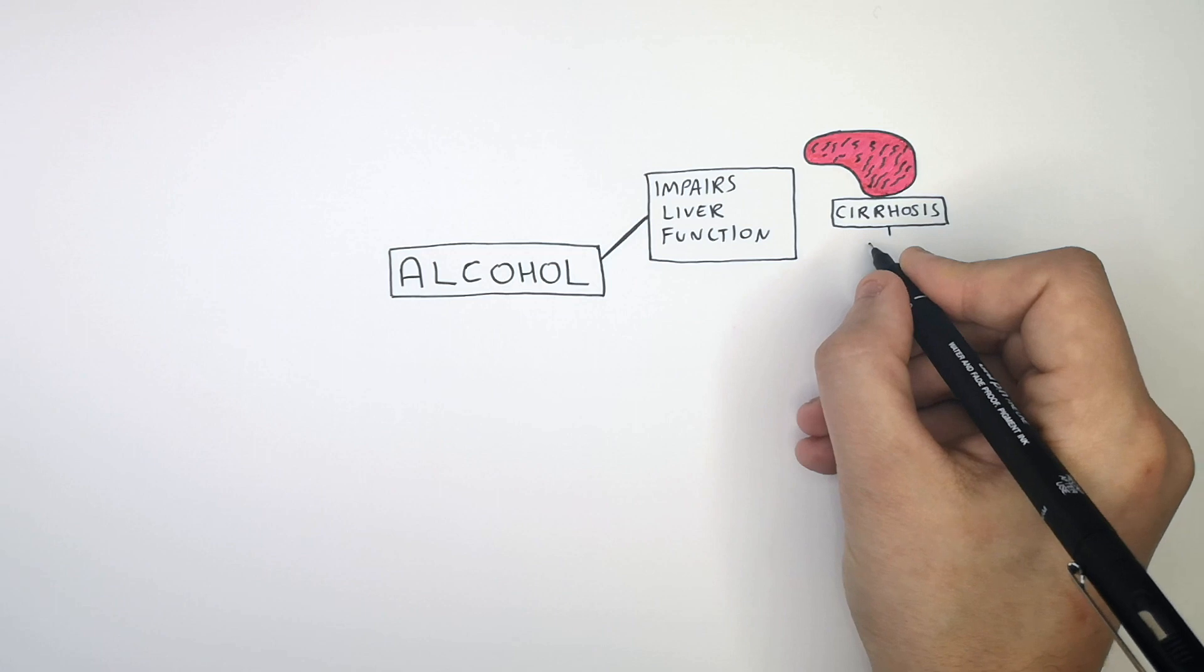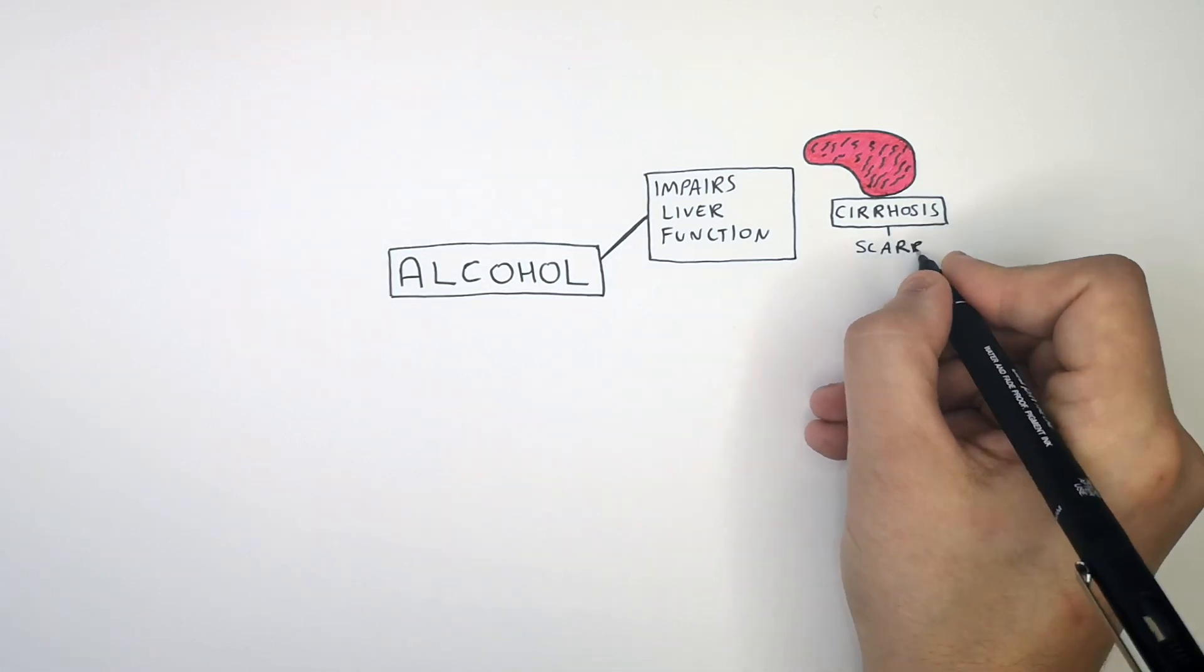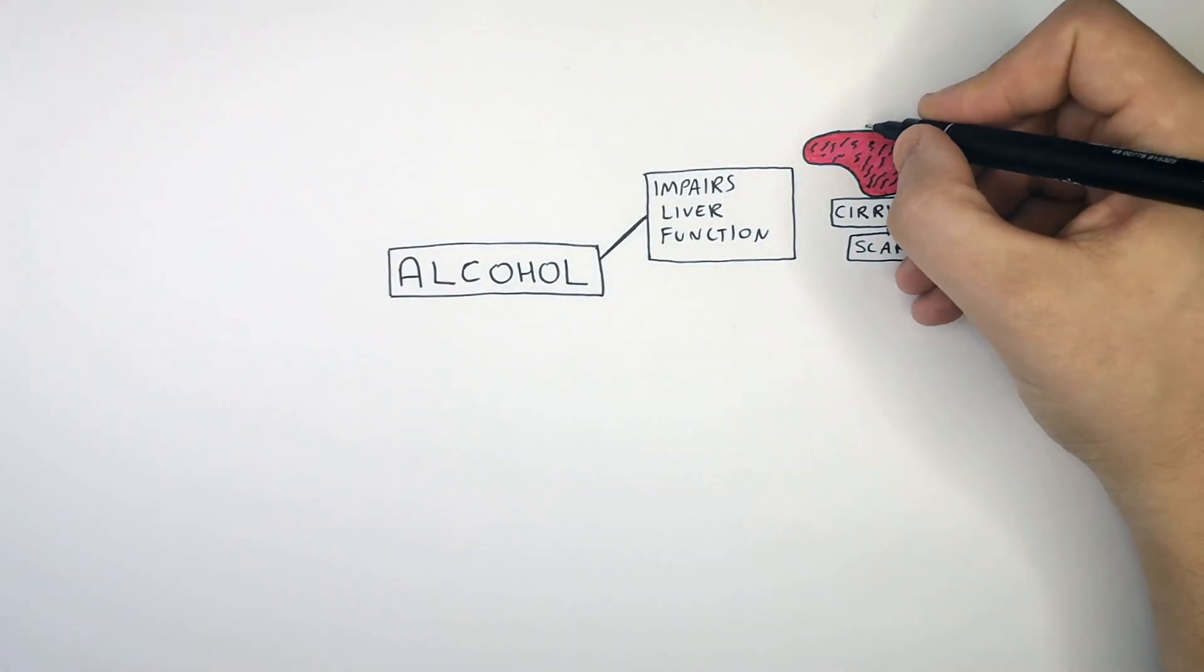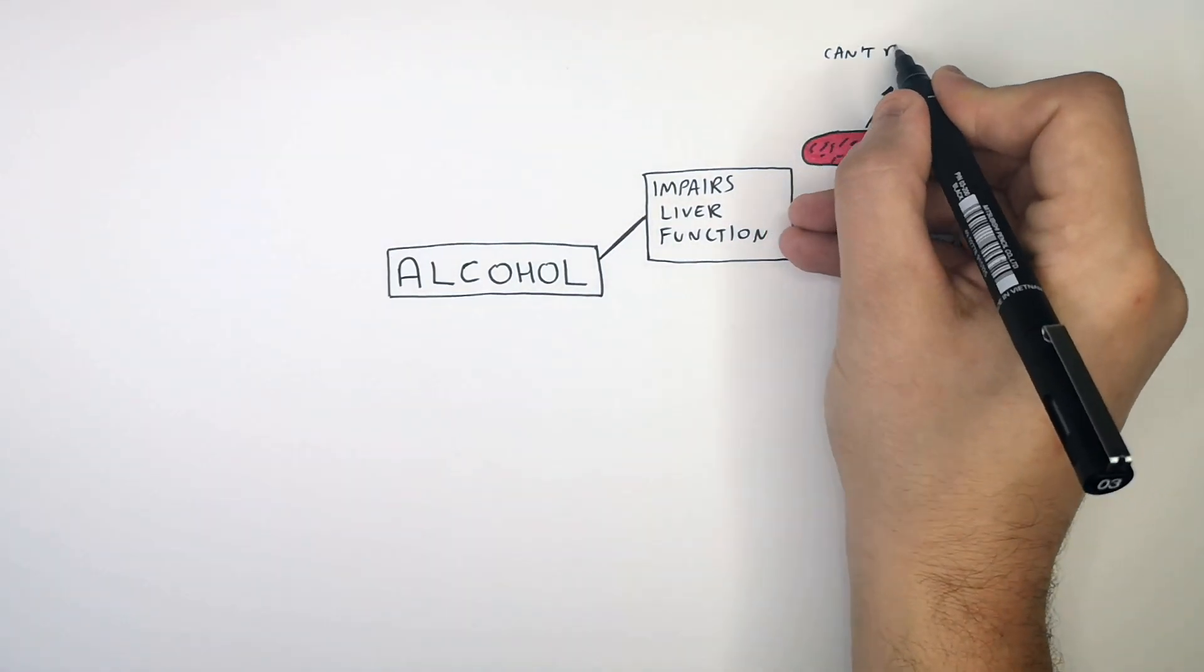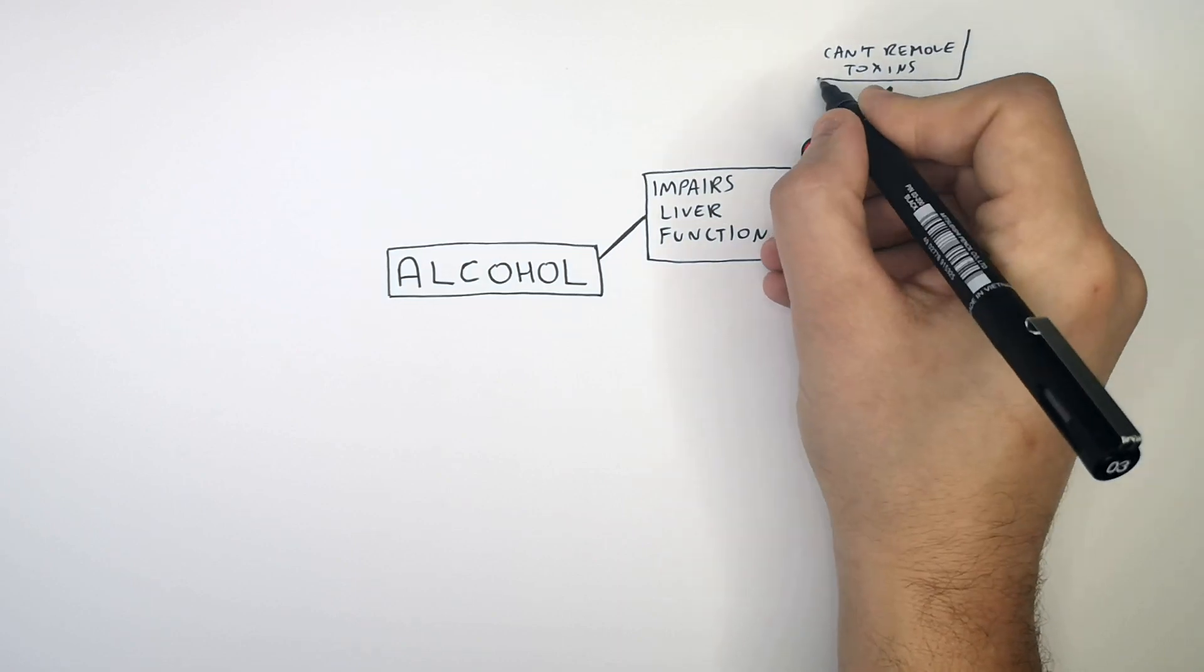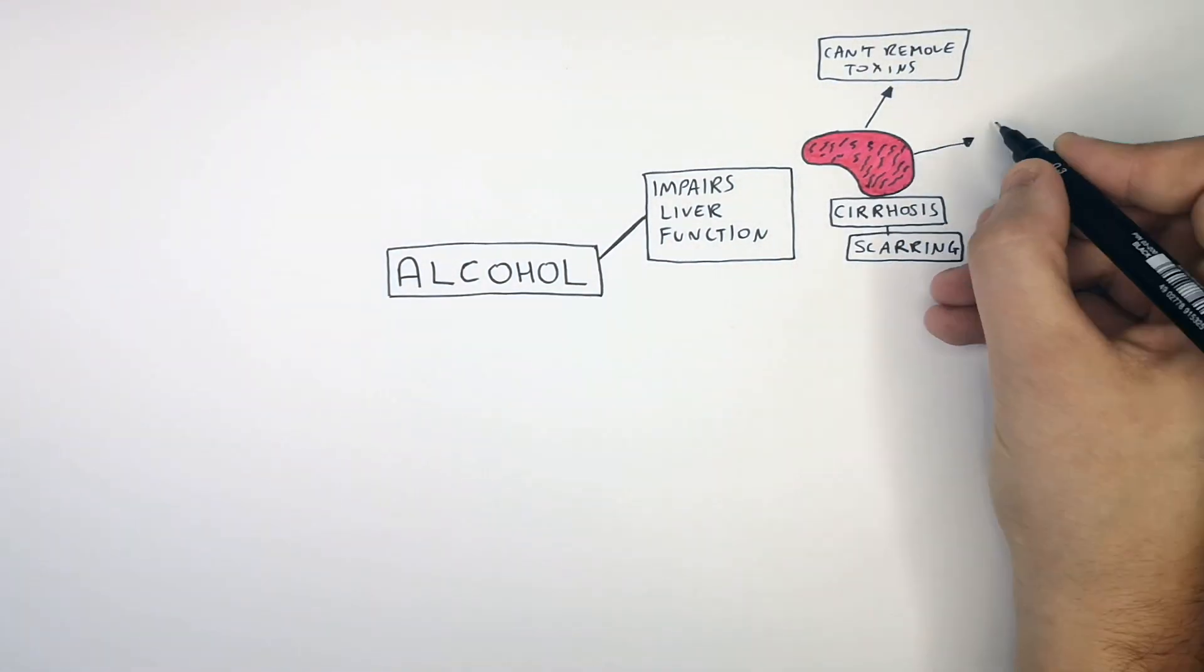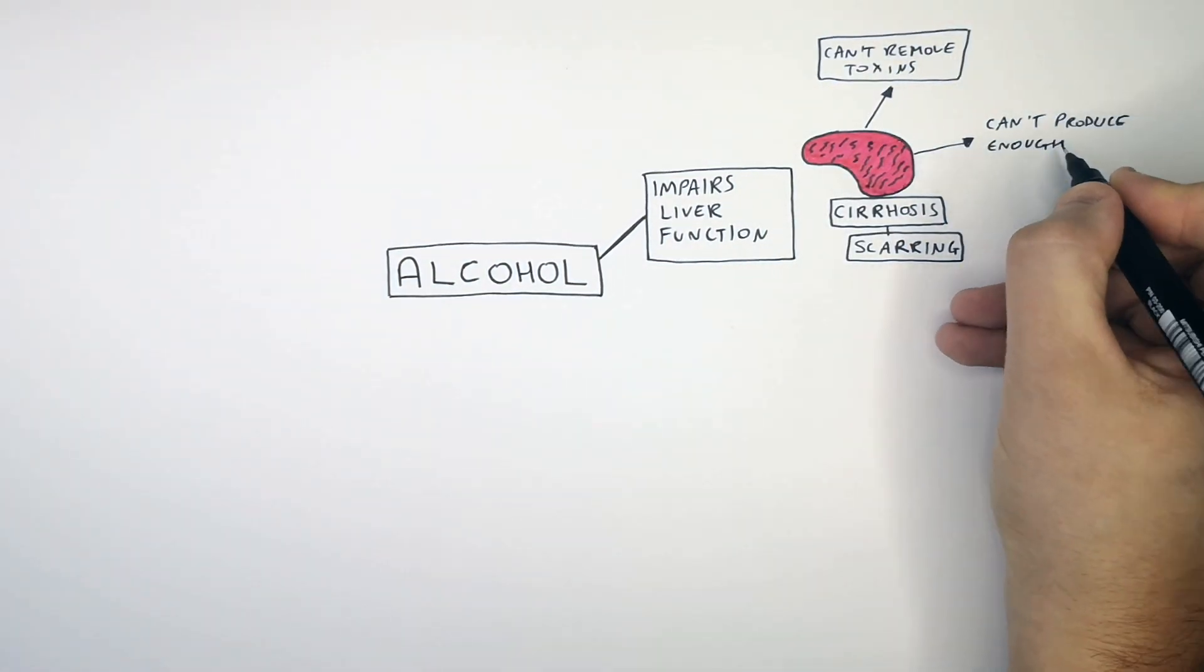So remember, cirrhosis is a disease caused by the scarring of the liver, which is caused by excessive alcohol drinking. If you have cirrhosis of the liver, it means that your liver cannot remove toxins from your body, and it also means that it can't produce bile as effectively.